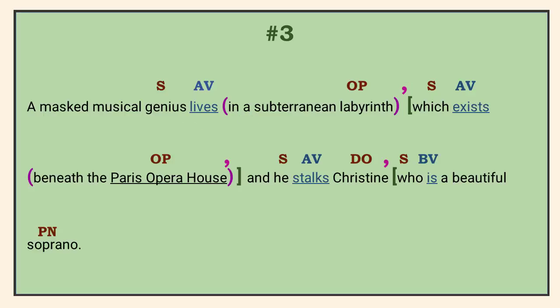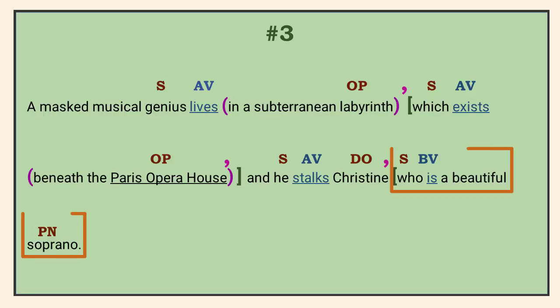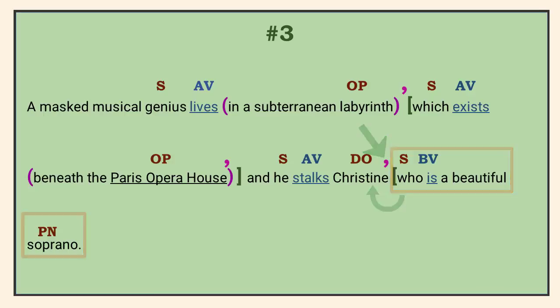The sentence continues with another independent clause. Since the two are joined by the coordinating conjunction SO, we need a comma to avoid a run-on. We already have a comma for the preceding restrictive relative clause, so we can continue. The second relative clause modifies the direct object in the independent clause. It is non-restrictive because the fact that she is beautiful and a soprano is extra information. If the writer wanted to emphasize these facts as the motivation for stalking, they would use a subordinating conjunction such as 'because' instead, to create a stronger relationship between the two ideas.